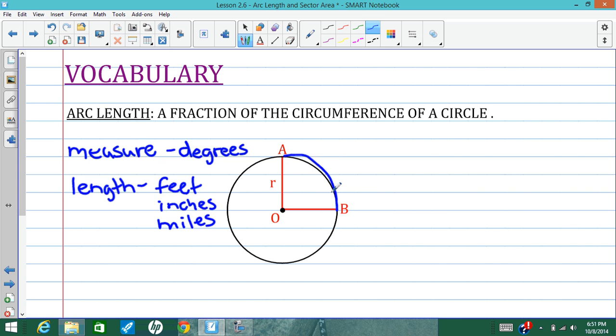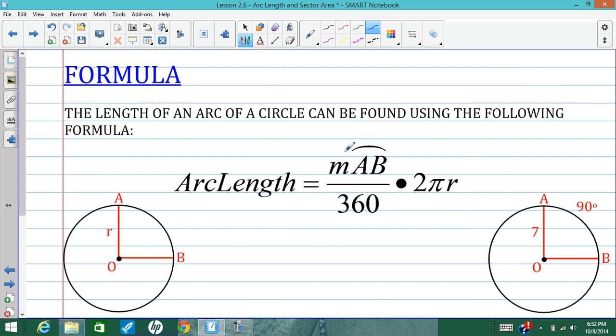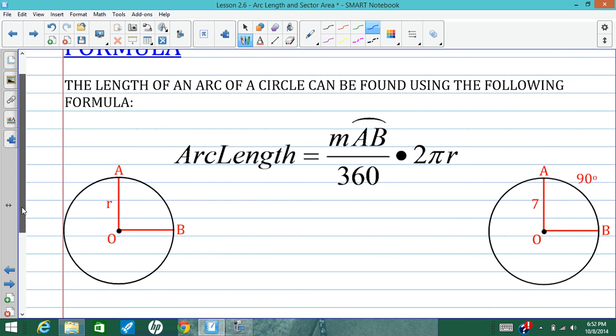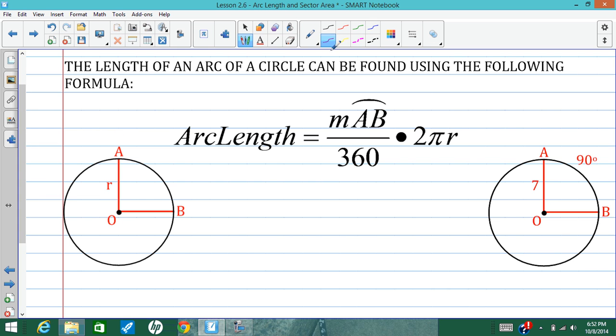Okay, so we can find the length of this arc using a formula for arc length. So we're going to do a fraction of the circle again, just like we did with sector area. But this time we're going to multiply by the circumference formula. So, for example, over here, I think I have the same exact circle. This time we'll find the arc length. So I'm going to go with 90 degrees over 360 times 2 times pi times the radius.